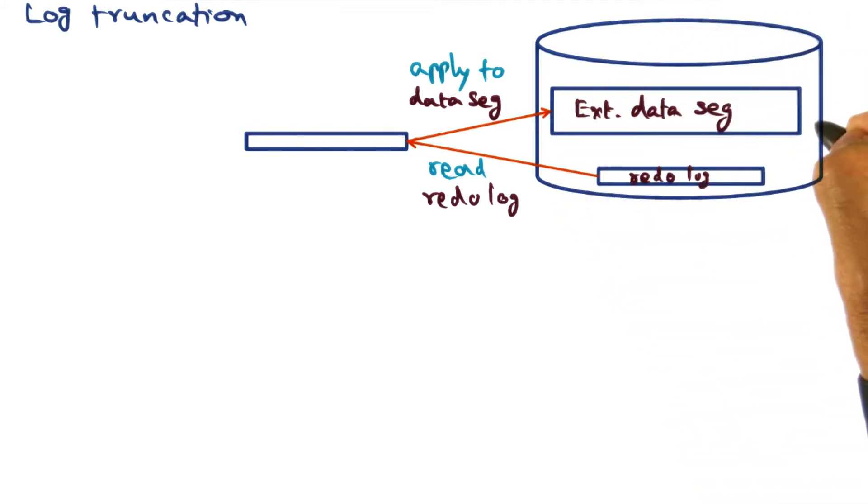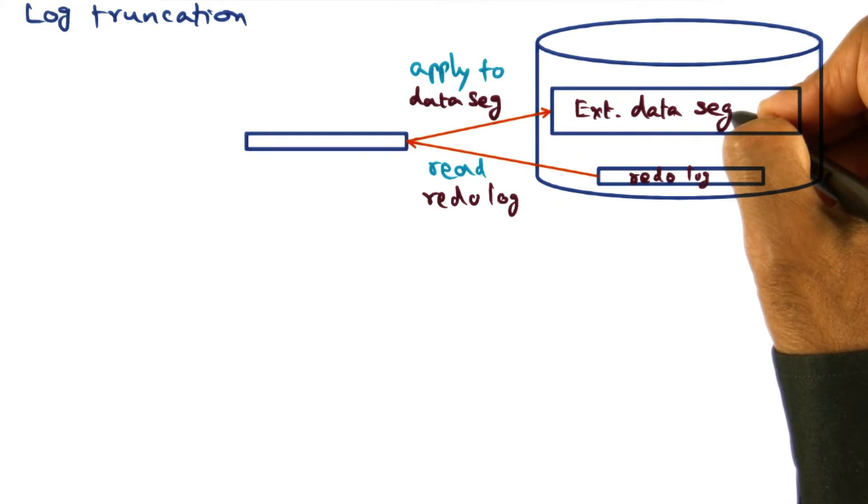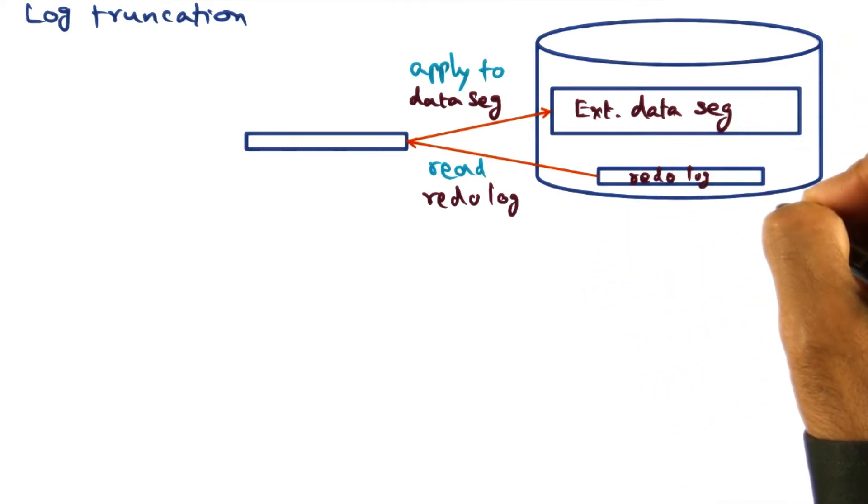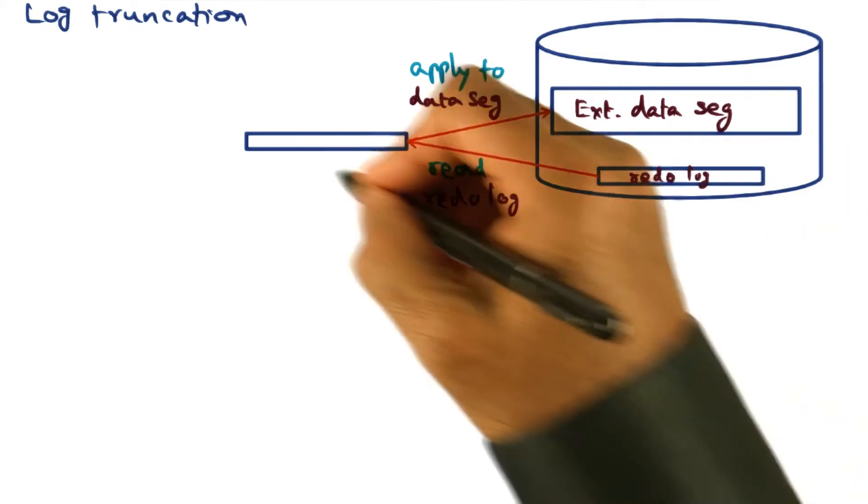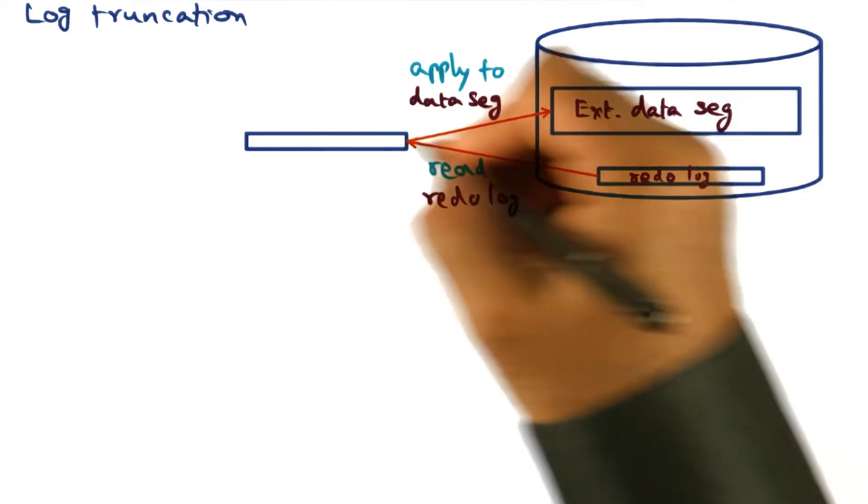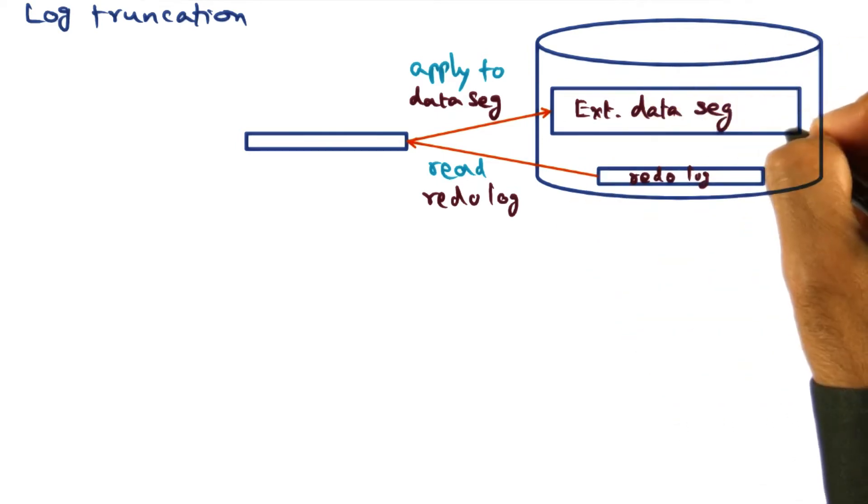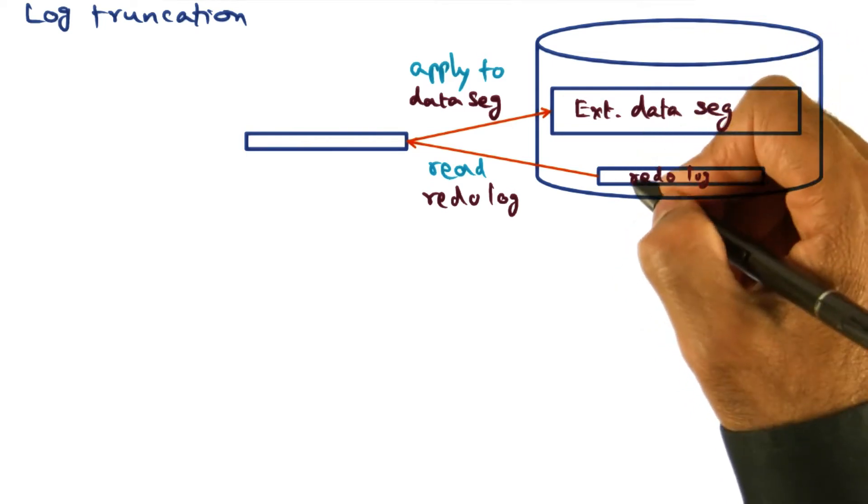So we have external data segments, which of course we need because that is where the persistent objects are actually contained. But we're also creating these redo log records that are reflections of changes that we made to the in-memory versions of these persistent data structures. Eventually, we want these redo logs that represent changes to the external data segment to be applied to the external data segments.